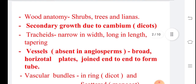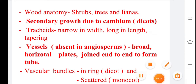The second point is wood anatomy. Wood is generally seen in shrubs, trees, and lianas. Lianas are woody climbers, commonly called lianas — for example, Entada is one large climber known in gymnasiums. In wood anatomy, the secondary growth is due to the cambium and is generally seen in dicots. Wood is an important source of anatomical data.